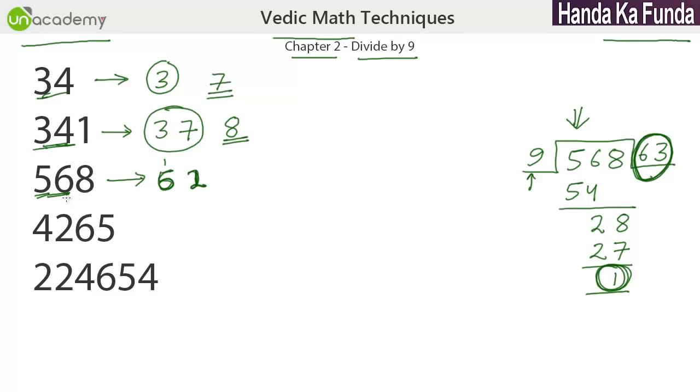Continue the same process. 2 plus the next number which is 8. 2 plus 8 is 10. So, I write down 0. Again, a carry is generated. If a carry is generated, I have to increase both of them. If I increase both of them, what do they become? 2 becomes 3 and 0 becomes 1. So, what is my quotient now? My quotient is 63 and my remainder is 1.